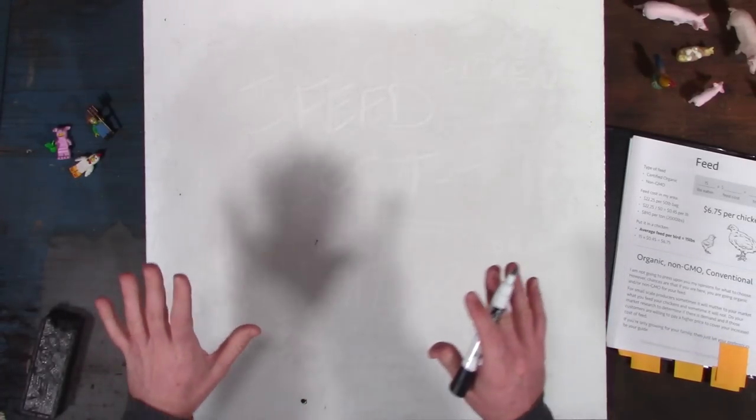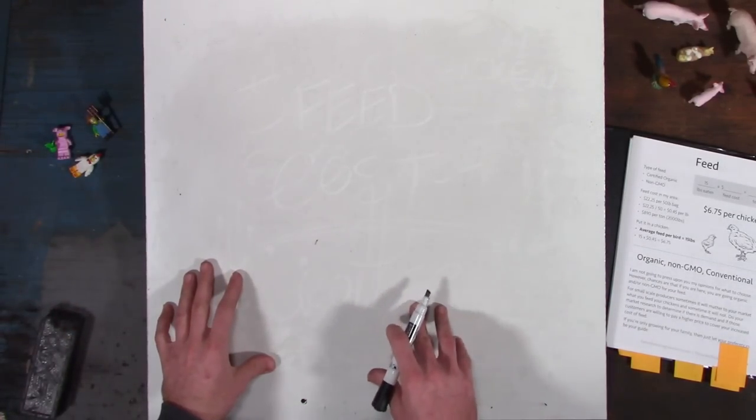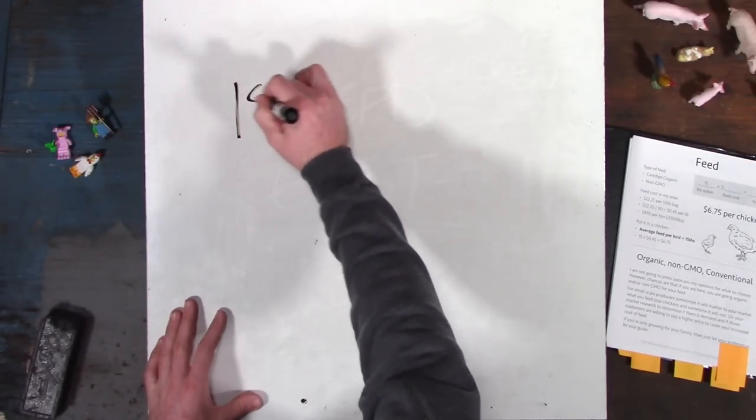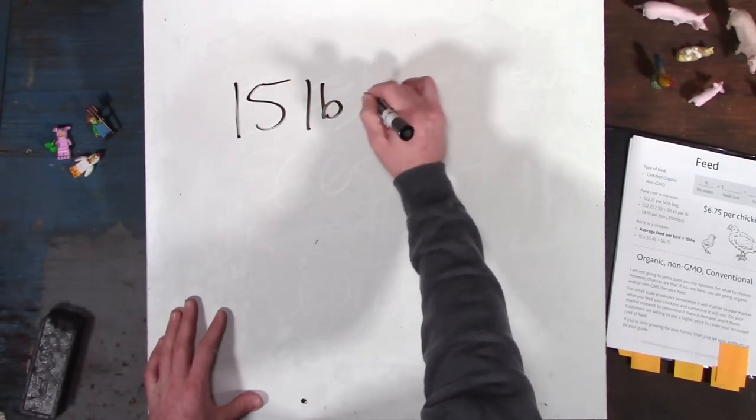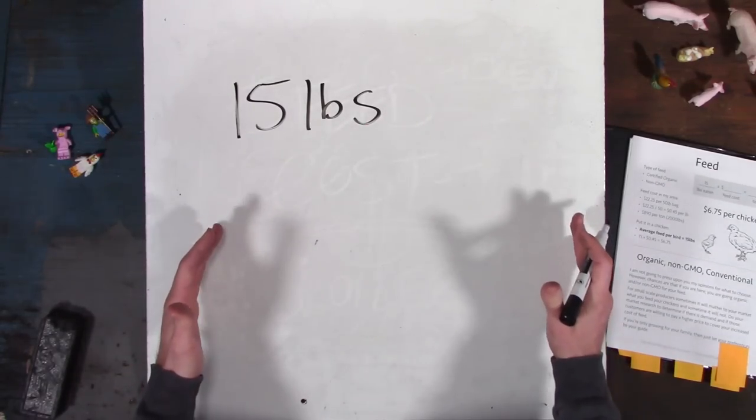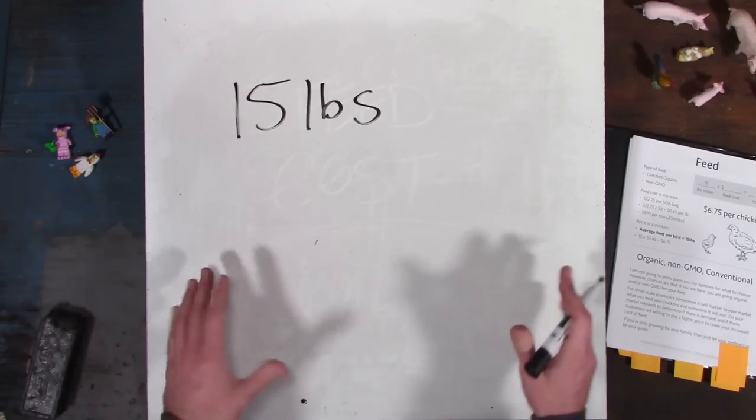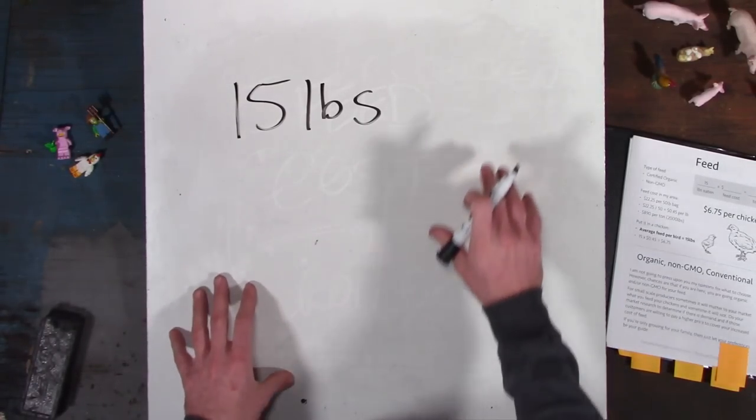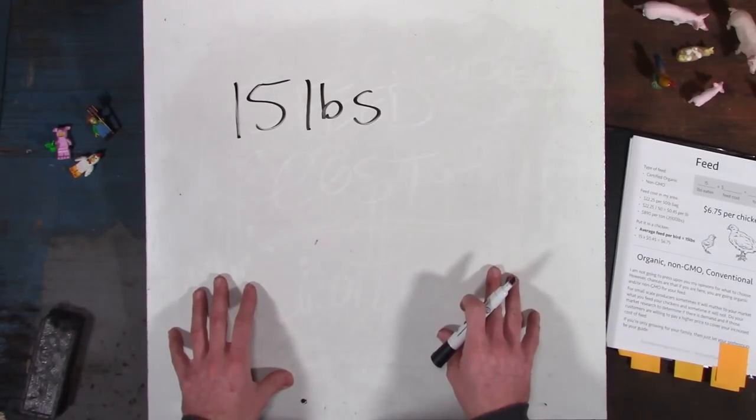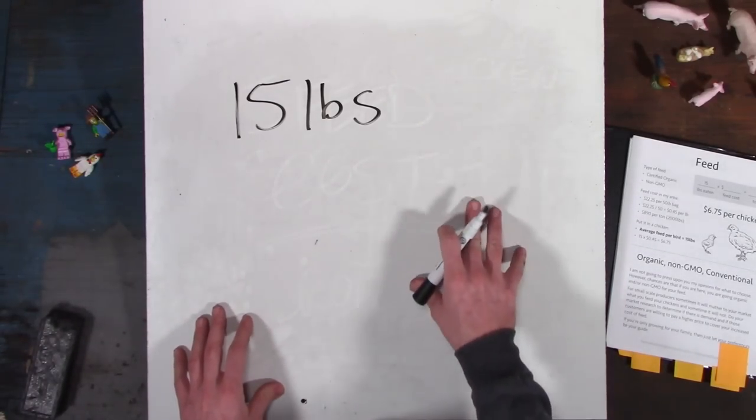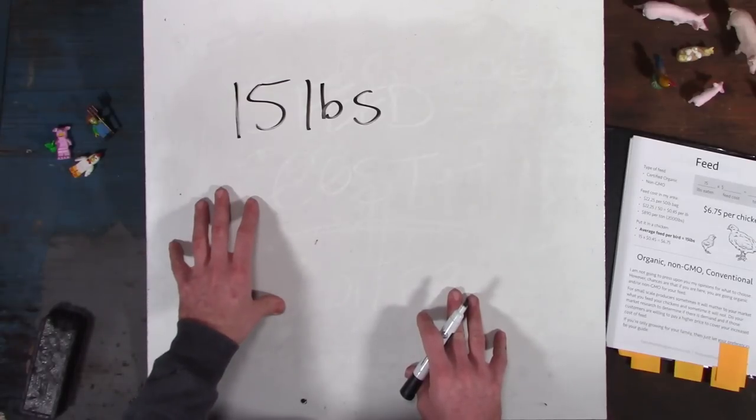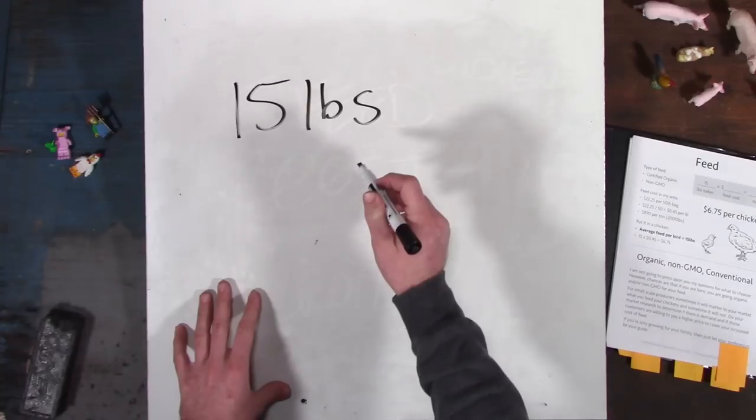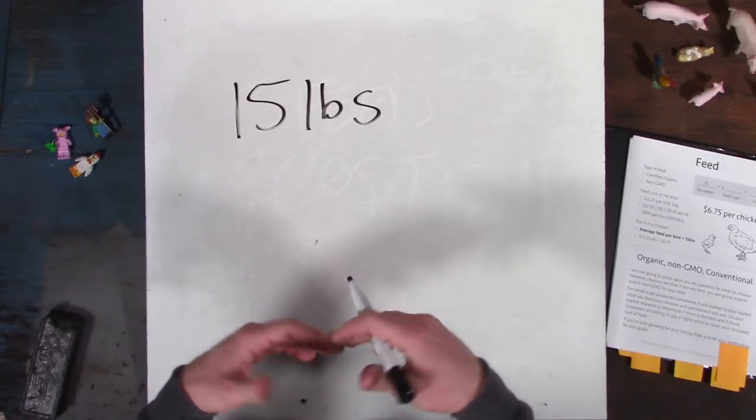So getting past all the nonsense disclaimer stuff, I know from raising chickens for a number of years that the average chicken eats 15 pounds of feed over its eight week lifespan as a broiler chicken. That can vary. We're using that as a benchmark. It can go a little higher. It can go a little lower. Depends on your feed quality, the temperature outside, the type of birds you get, the vitality of the birds that you have. But we'll say that 15 pounds is a good starting point for someone getting into this.